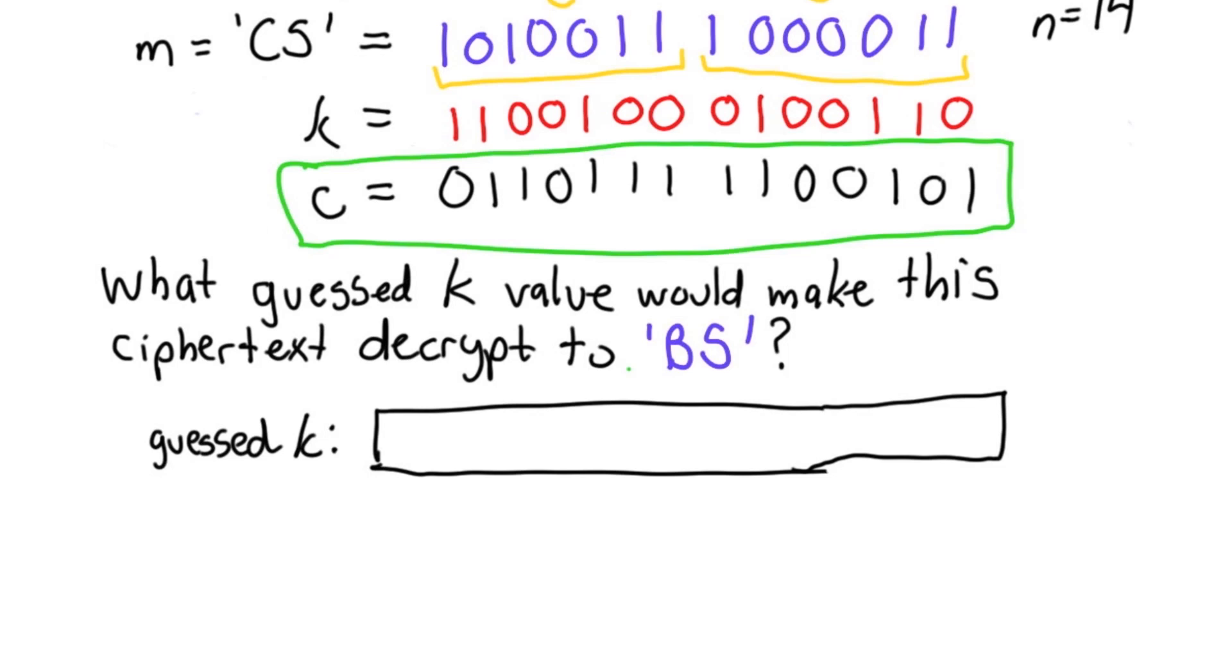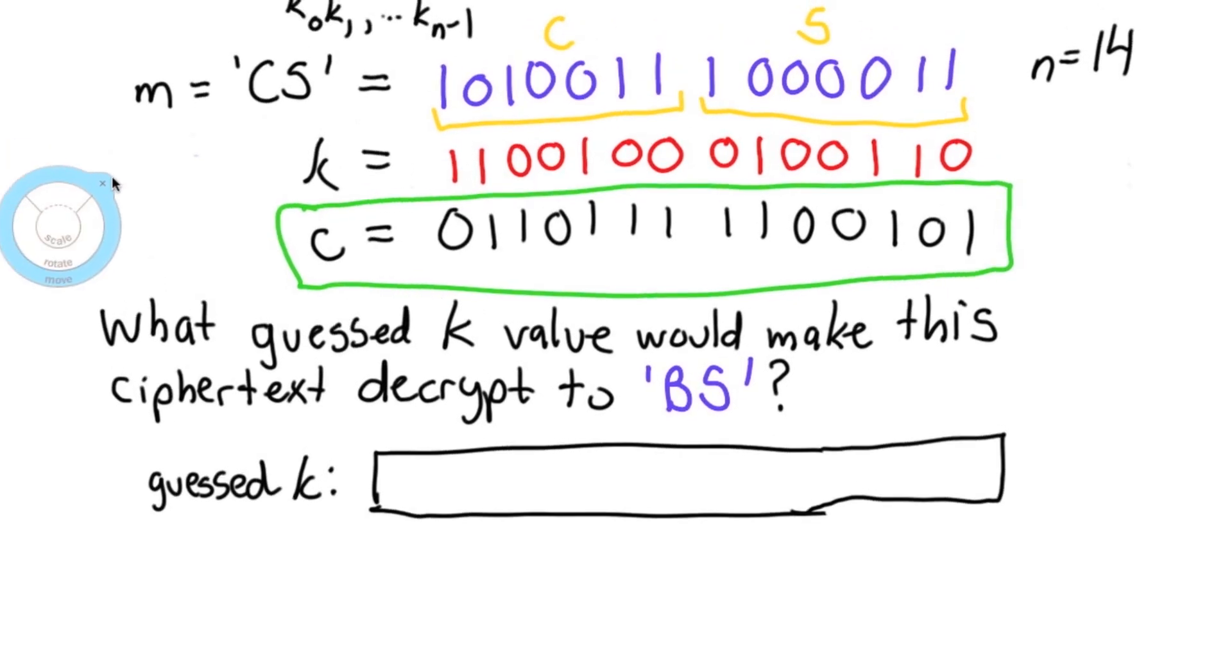The way to produce the message BS from this ciphertext, we just need to change the first letter to be 1 below where C was. That means we want to change this bit to be a 0 instead of a 1 in the output. That means we need to flip one bit in the key, so we'll need to change this key bit to be a 1 instead of a 0. Everything else will be the same. This will change the output letter by 1.